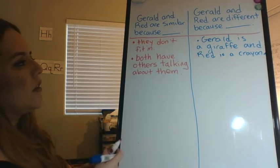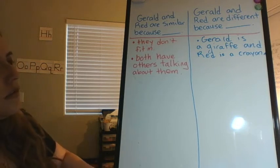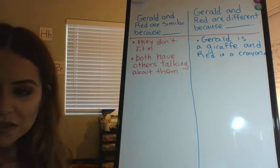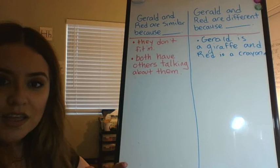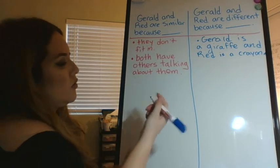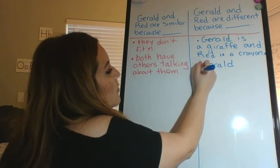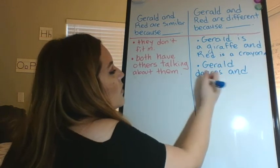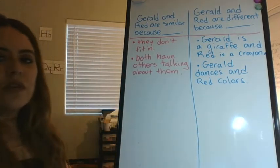How are Gerald and Red different? Well, Gerald is a giraffe and in the story he dances, and Red colors. So they're both trying to be good at different things. Gerald is trying to be a good dancer and Red is trying to be a good color. So Gerald dances and Red colors — that's one way they're different.